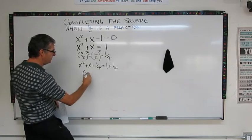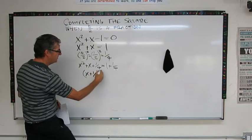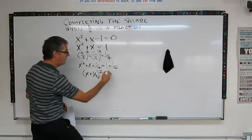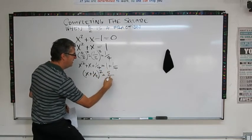We know that this is going to be x plus 1 half, squared. And 1 plus 1 quarter is 5 fourths.